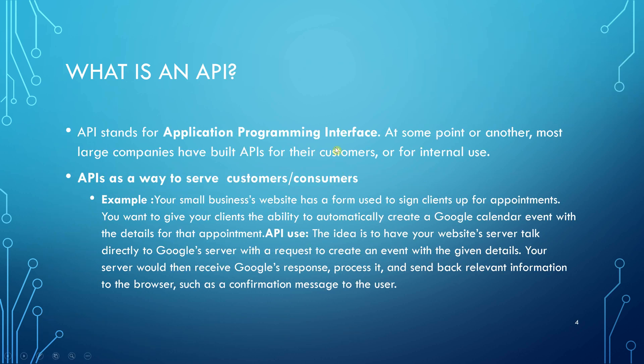An API — what's that? An Application Programming Interface. Nearly every web server has an API as part of that remote web server. The simplest example I could come up with: your laptop is set up booking clients in for an exercise session, and you want to create a Google Calendar event. There is an API used between your computer and the Google server to create an event with given details. Your server then receives Google's response, processes it, and sends information to the browser such as a confirmation message to the user.